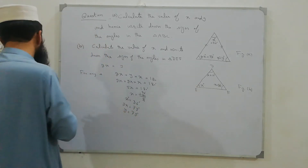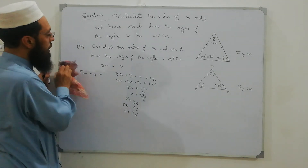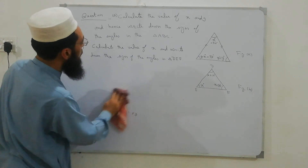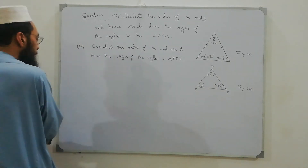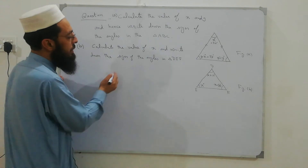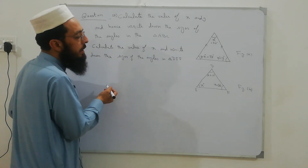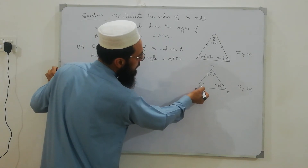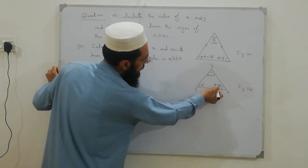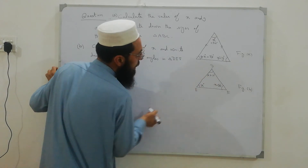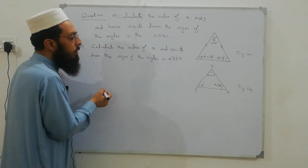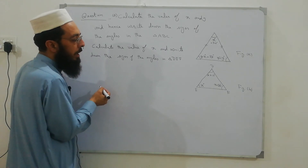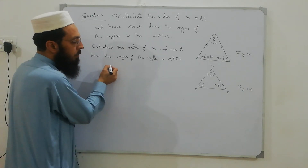We solved Part A. Now I solve Part B. Part B: calculate the value of x and write down the sizes of the angles in triangle DEF. In triangle DEF, one angle is x degrees, the second angle is x plus 20 degrees, and the third angle is x plus 10 degrees. We know that the sum of all interior angles of a triangle is equal to 180 degrees.